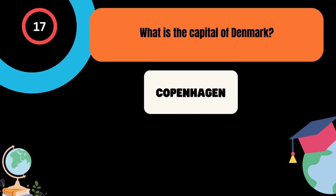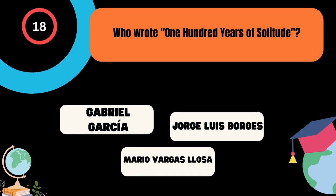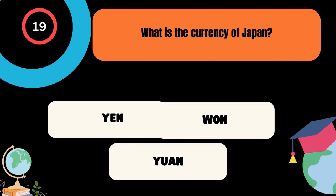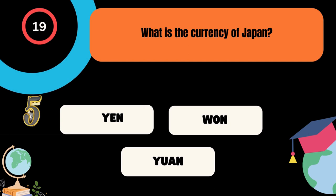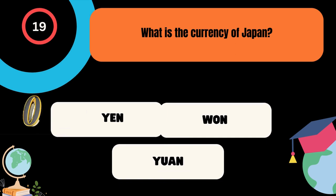Who wrote 100 Years of Solitude? A. Gabriel Garcia Marquez, B. Jorge Luis Borges, C. Mario Vargas Llosa. The correct answer is Gabriel Garcia Marquez. What is the currency of Japan? A. Yen, B. Won, C. Yuan. And the correct answer is Yen.